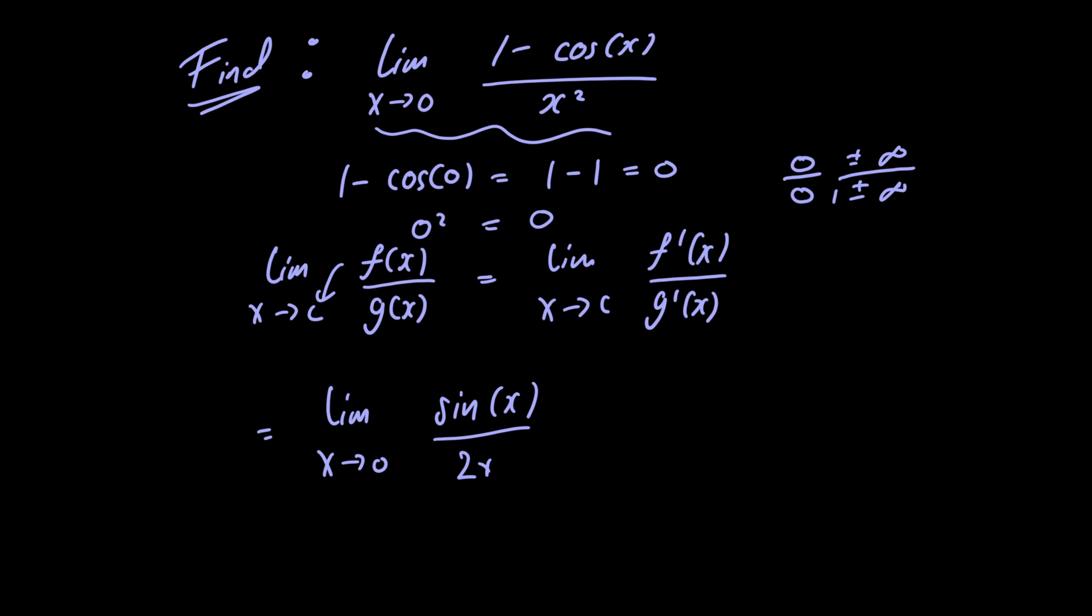Now notice that if we plug in x equals 0, we would have sin(0) in the numerator, which equals 0, and 2 times 0 in the denominator, which also equals 0. So our limit is of indeterminate form 0/0 again, and we're going to have to apply L'Hôpital's rule for a second time.